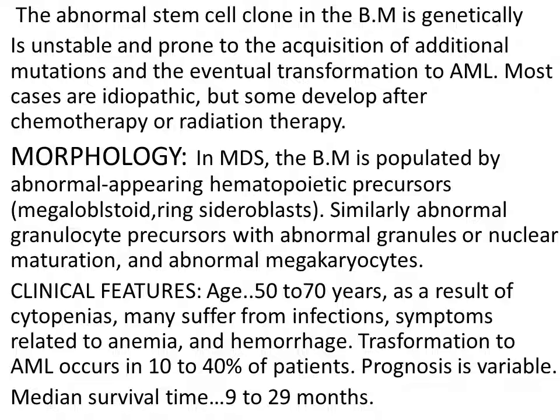We can also see abnormal megakaryocytes — different abnormalities may be there. Normally there is one lobulated large nucleus with very big cytoplasm. In these cases, we can see maybe more than one lobe of the nuclei, or maybe two different nuclei in one megakaryocyte cell. So there are different changes — these are abnormal megakaryocytes.